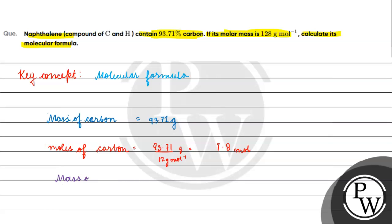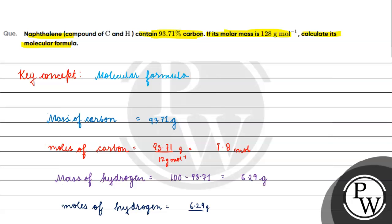Now, to find the moles of hydrogen: the mass of hydrogen will be 100 minus 93.71 grams, which equals 6.29 grams. The number of moles of hydrogen will be 6.29 grams divided by 1 gram per mole, which gives us 6.29 moles.